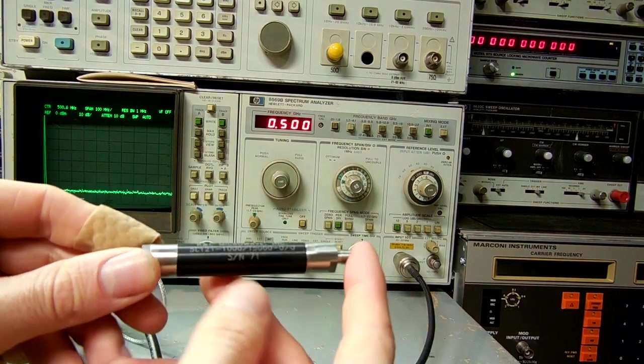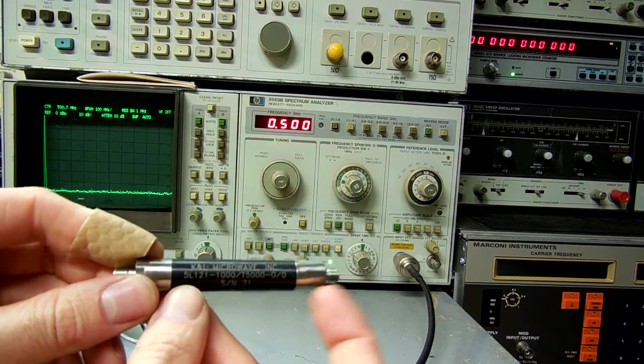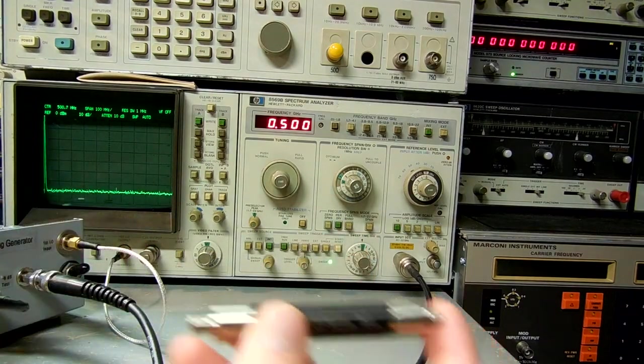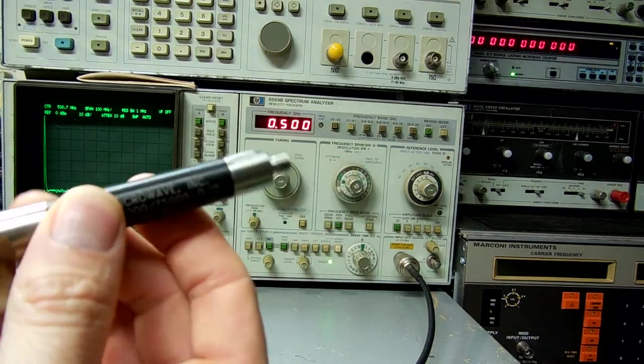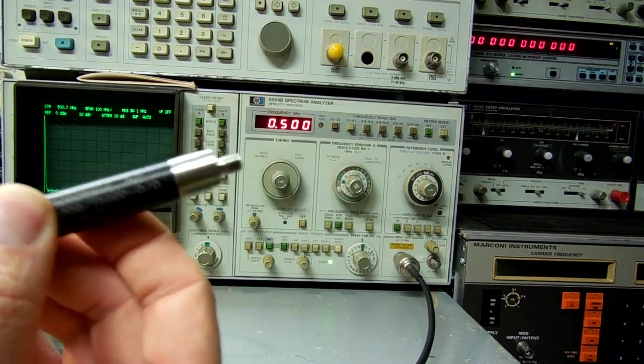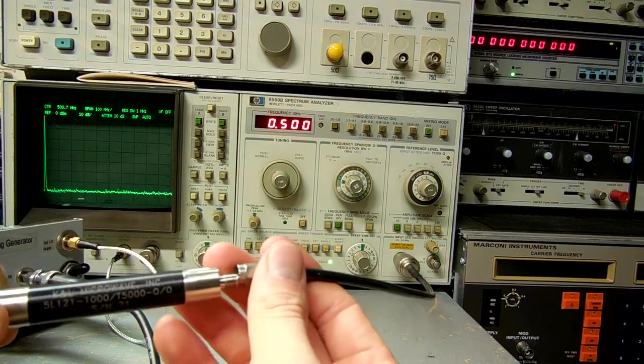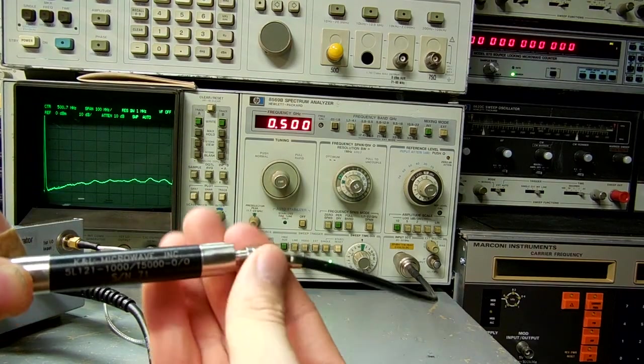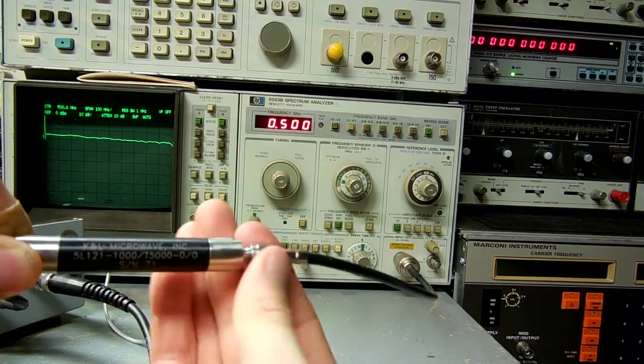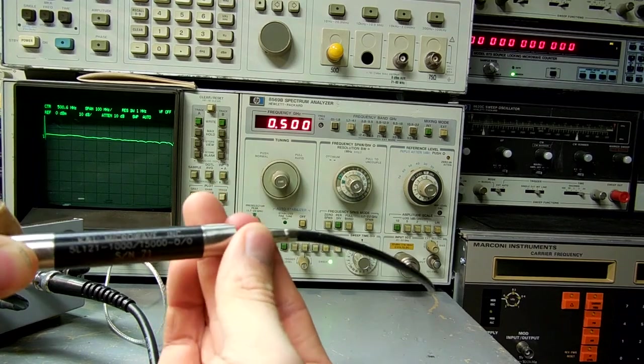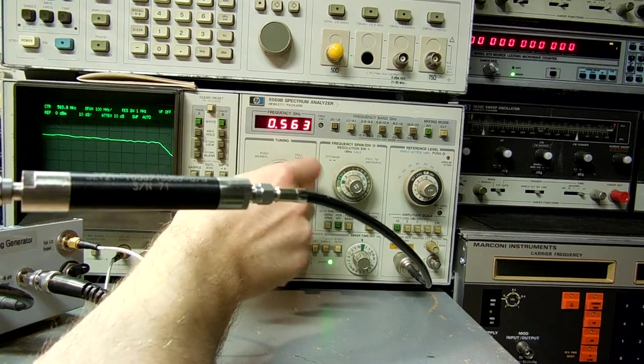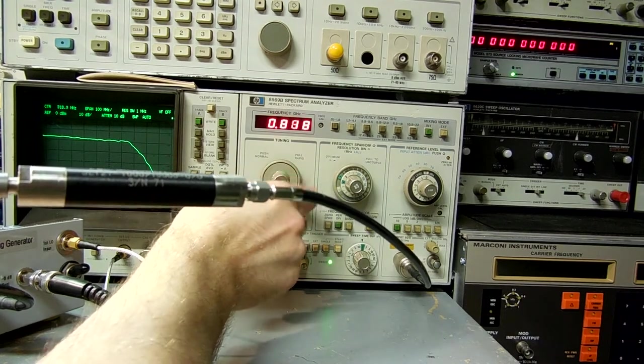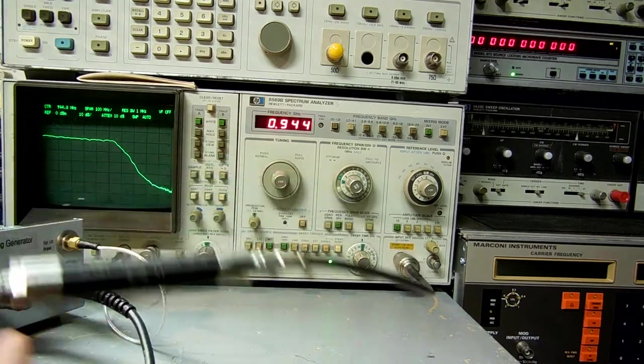Here's a 1 GHz low pass filter. Hooking up the tracking generator output to one side of the filter and the RF input to the other side. You can see the response of the filter.